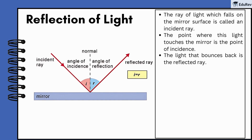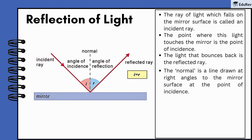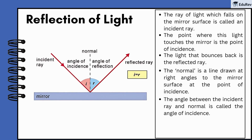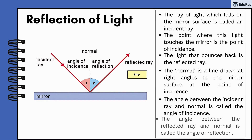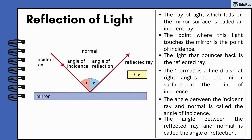The light that bounces back is the reflected ray. There's also a line called the normal, drawn at right angles to the mirror at the point of incidence. The angle between the incident ray and this normal line is called the angle of incidence, and the angle between the reflected ray and the normal is the angle of reflection.